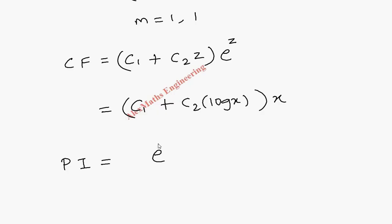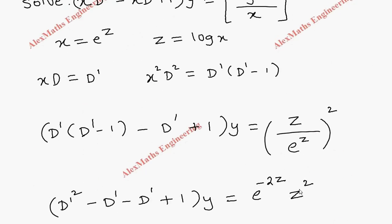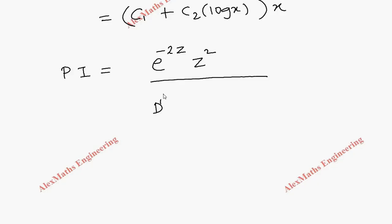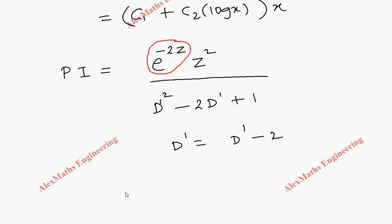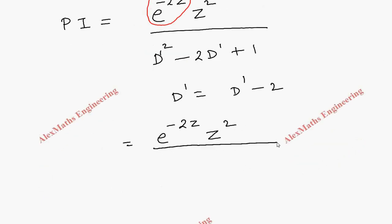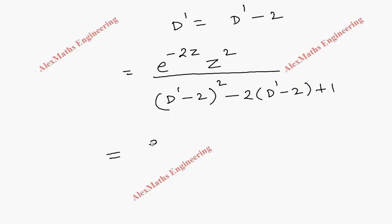Coming to the particular integral, the right-hand side is e power minus 2z into z². So PI equals e power minus 2z into z², divided by D'² minus 2D' plus 1. Wherever D' appears, we replace it with D' minus 2, since the value of a is minus 2. The denominator becomes (D' minus 2)² minus 2(D' minus 2) plus 1, which expands to D'² minus 4D' plus 4 minus 2D' plus 4 plus 1.